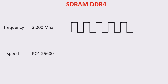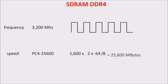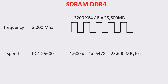The speed is provided as a number — 25600 — representing the transfer rate measured in megabytes. It is obtained by multiplying the frequency times 2 (because of the double data rate), times 64 (which is the width of the bus between CPU and RAM), divided by 8 (which is the byte dimension). This is our bandwidth, or the bytes we can transfer in a second. Since the bus width is always 64 bits and the byte is always 8 bits, 3200 MHz and 25600 MB/s give the same information.